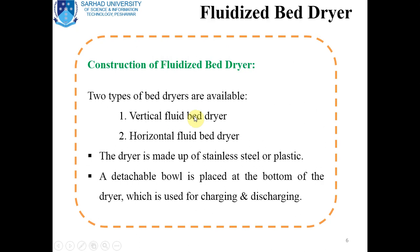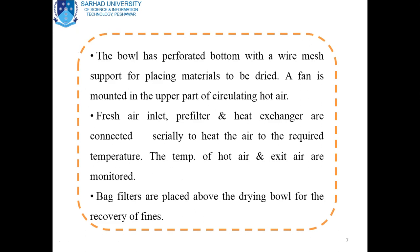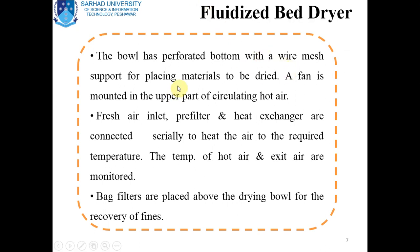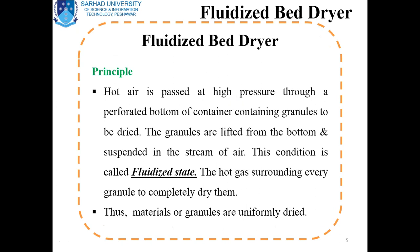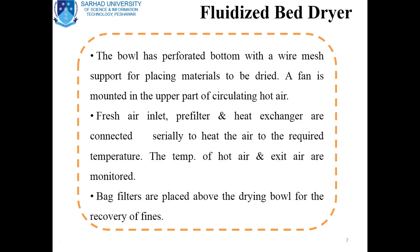The detachable bowl is placed at the bottom of the dryer and is used for charging or discharging — in other words, introducing and removing the material. That bowl has a perforated bottom with a wire mesh or sieve that supports the material to be dried. A fan is mounted in the upper part for circulating hot air. Hot air is passed at high pressure through this perforated bottom, which is the detachable bowl.